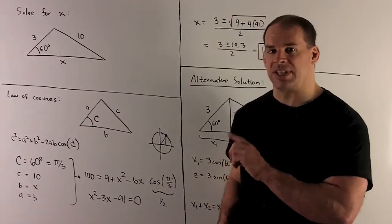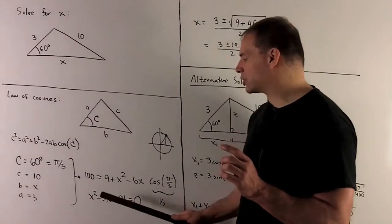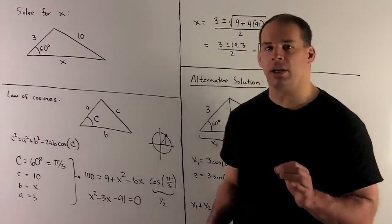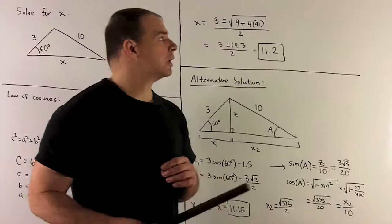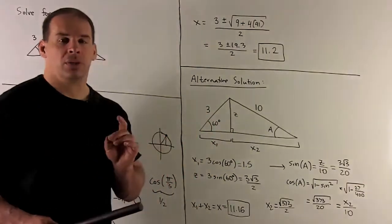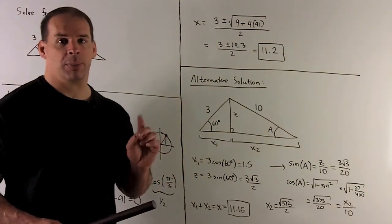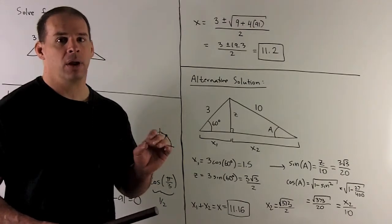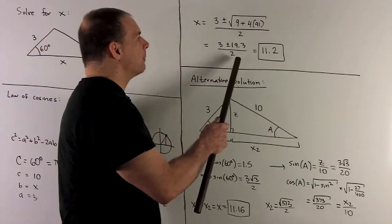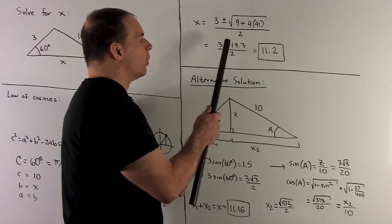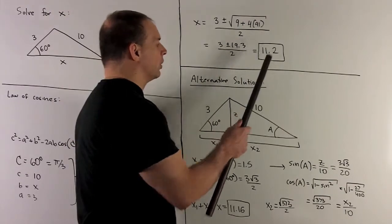We sort this out, put everything on one side, and we get the equation x squared minus 3x minus 91 equals 0. We'll apply the quadratic formula: x equals 3 plus or minus the square root of 9 — minus and minus gives a plus — plus 4 times 91, all over 2. We simplify to two solutions; one is negative so we throw it away, leaving us with 11.2.